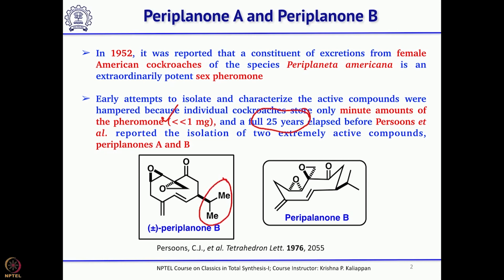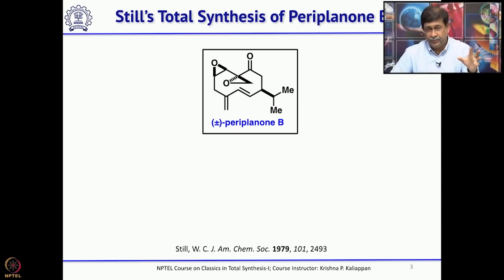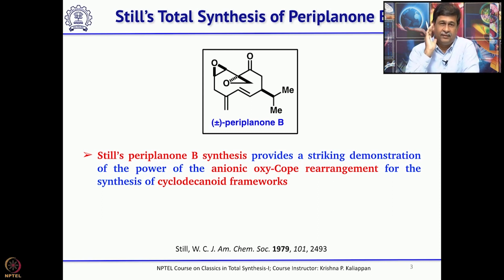The first synthesis of Periplanone B was reported by Still in 1979. Before completing the total synthesis, he initially made two wrong isomers. The key reaction he used in the total synthesis was the anionic oxy-Cope rearrangement to form the cyclodecane unit.